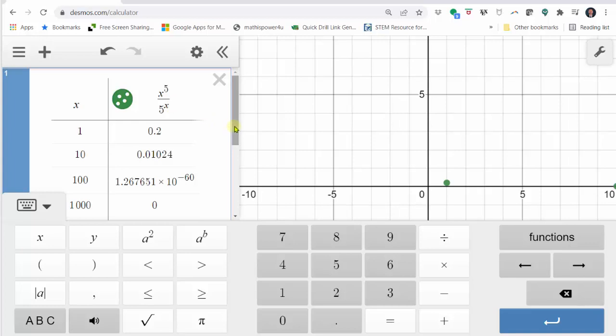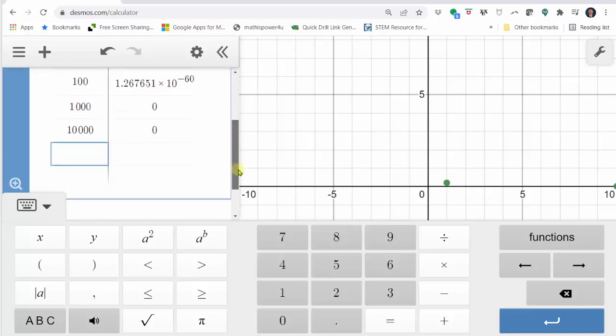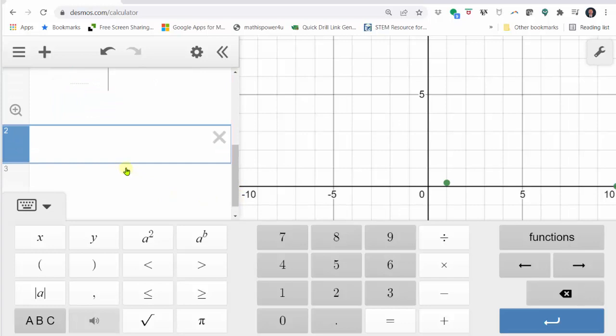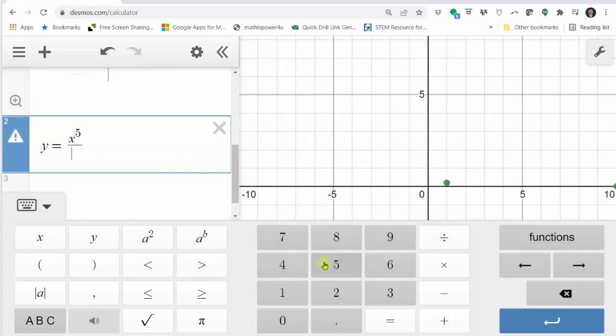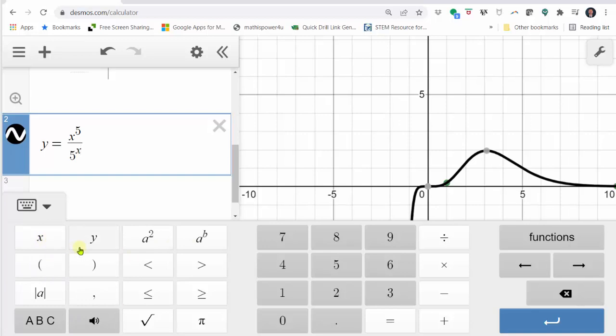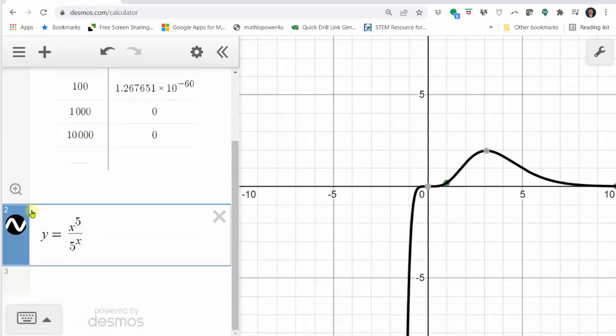While we're here though, let's also verify this graphically. Let's go down to cell two and enter the function y equals x to the power of five, right arrow, divided by five to the power of x. Let's go ahead and close the keypad.